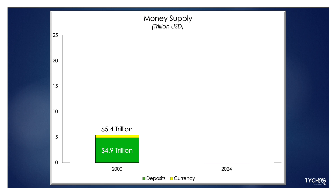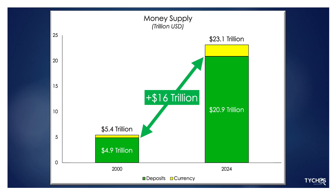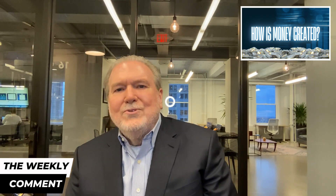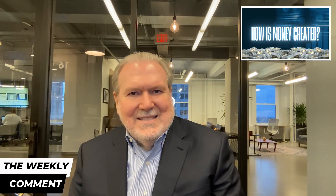The rest was currency, or cash. By the end of 2024, 24 years later, the total money supply defined by the Fed as deposits and currency had grown by $17.7 trillion to $23.1 trillion. That's an astonishing amount of growth. Not surprisingly, 90% or $16 trillion of that growth was in deposits and the remaining 10% in currency.